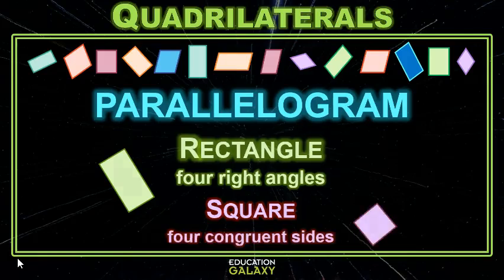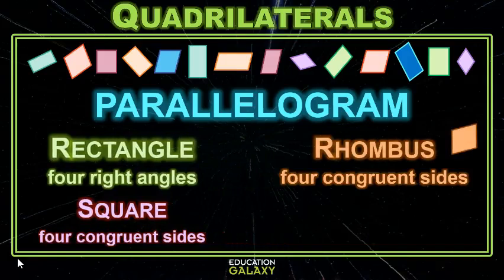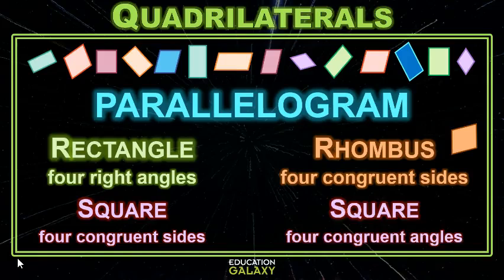Now, what happened to that rhombus? A rhombus is a parallelogram that has four congruent sides. Weird — sounds kind of like a square, but it's not. Not unless it also has four congruent angles. So all squares are rectangles, but not all rectangles are squares. And all squares are rhombuses, but not all rhombuses are squares.